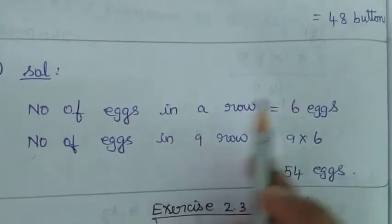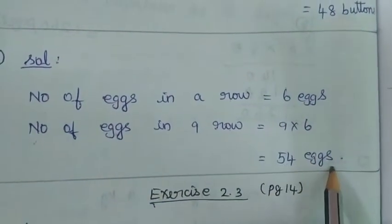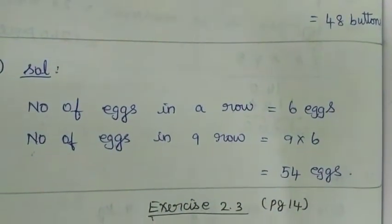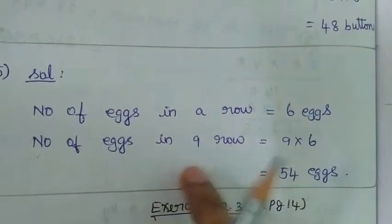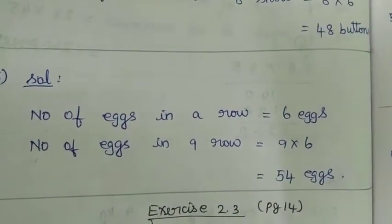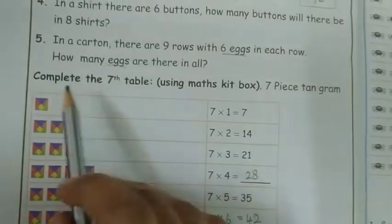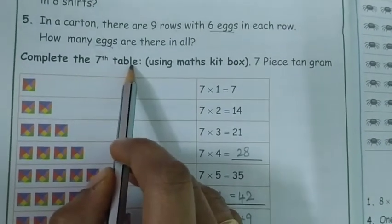6 fives are — 6 times, the answer is given. This is the answer. Write in your note. Next, complete the 7th table.